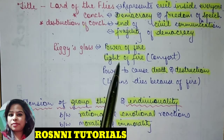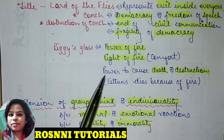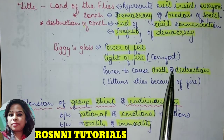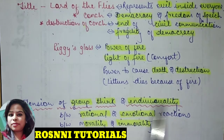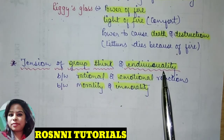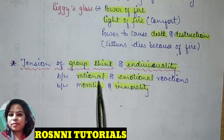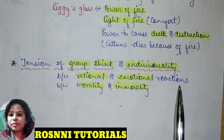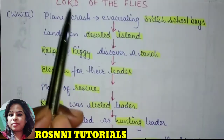Piggy's glasses represent the power of fire, used both for comfort and causing death and destruction. In a positive sense they roast meat and get warmth, but the same fire destroyed the entire forest and killed the youngest boy. The story explores the tension between group thinking and individuality, between rational and emotional reactions, and between morality and immorality.